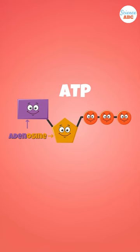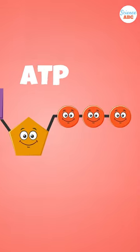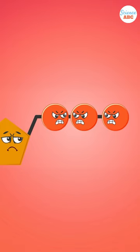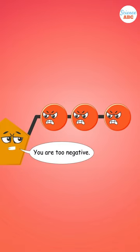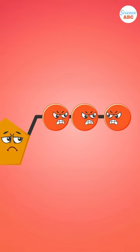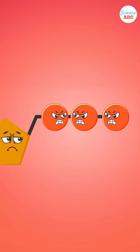Chemically, ATP stores energy through the phosphates. The three phosphates hanging like a tail at the end of the adenosine molecule are negatively charged, and since they have all the same charge, they repel each other.